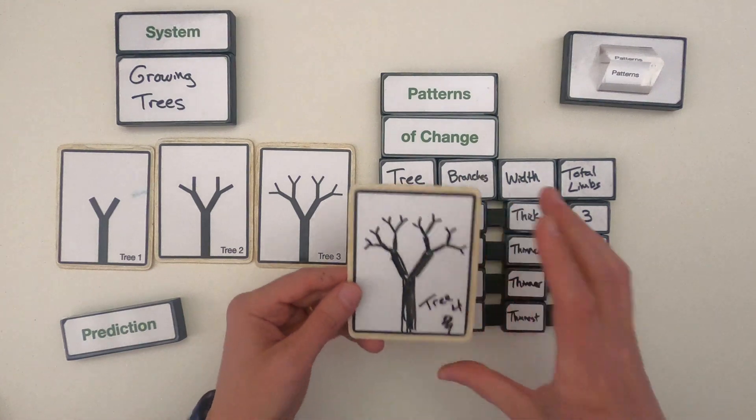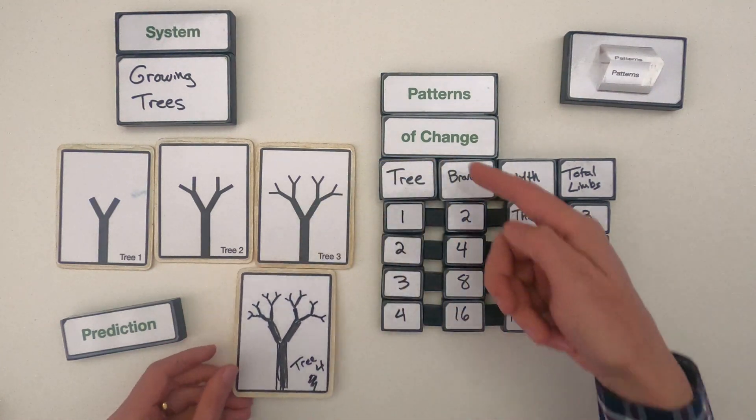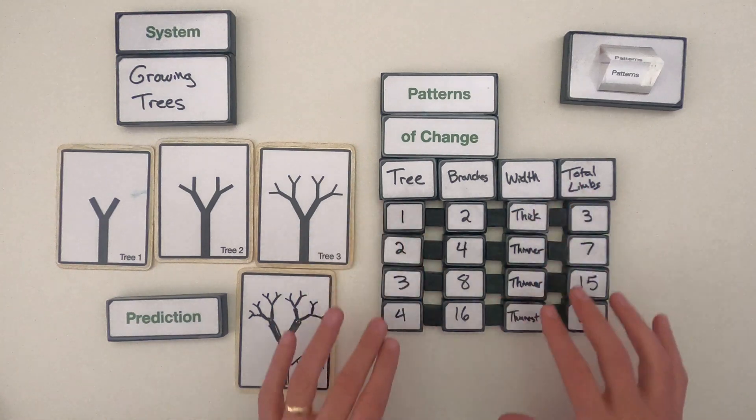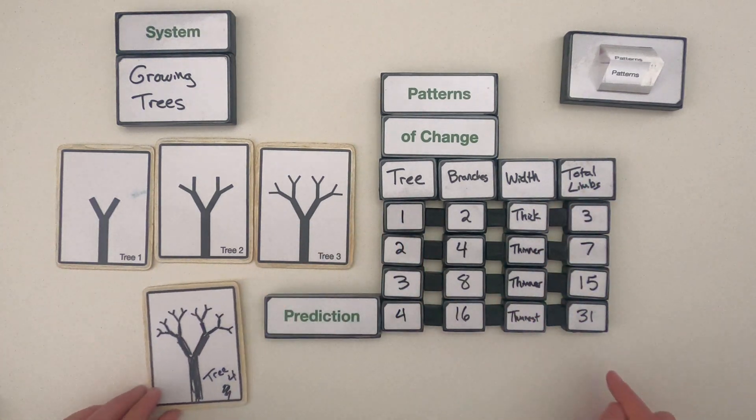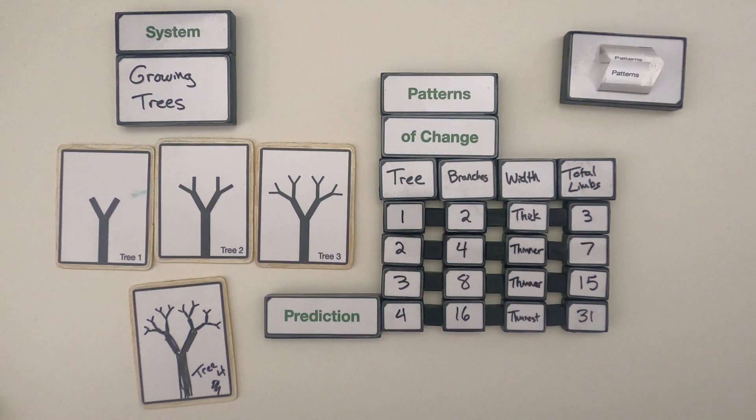So this is my prediction for tree four. It's based on patterns of change that I saw within the system so I can make predictions on this final row. So that's patterns of change.